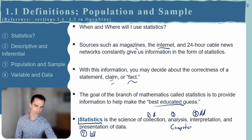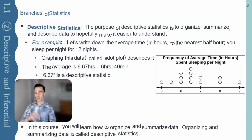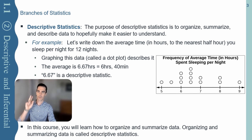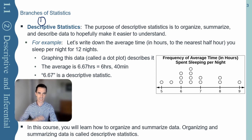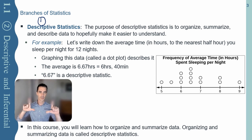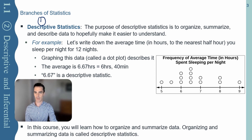Let's talk a little bit about the branches of statistics. There are two branches we want to highlight. The first and most important are descriptive statistics. These describe data — we don't want to look at a table of 100 different measurements of worms, we want to organize it in some fashion. Here's a little example.